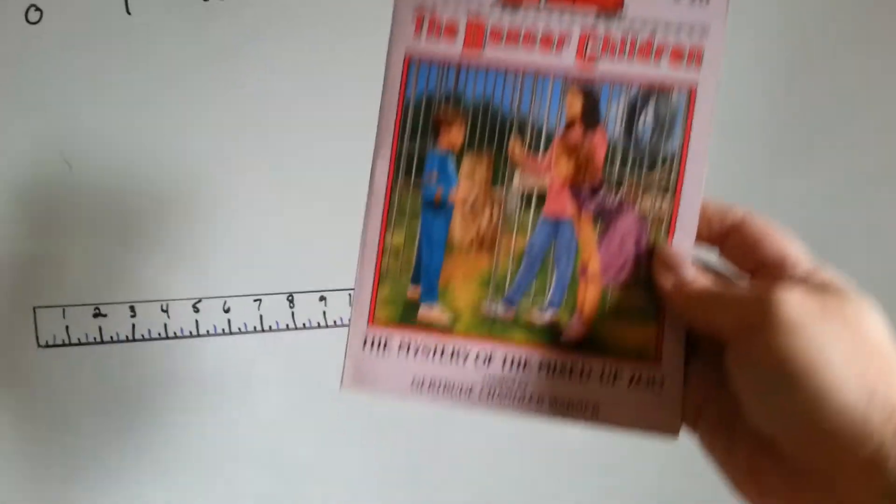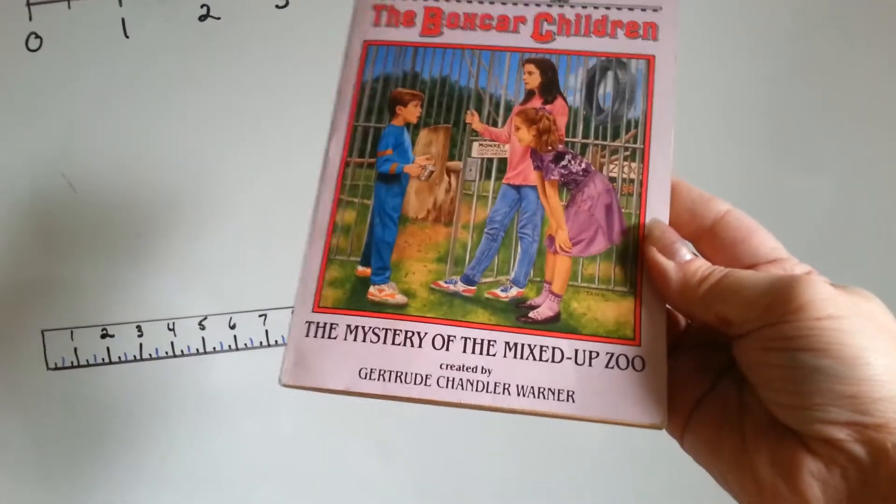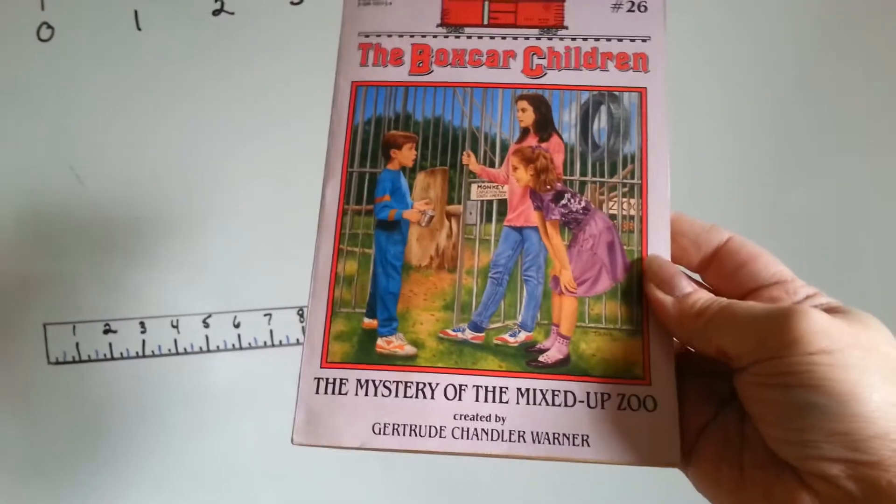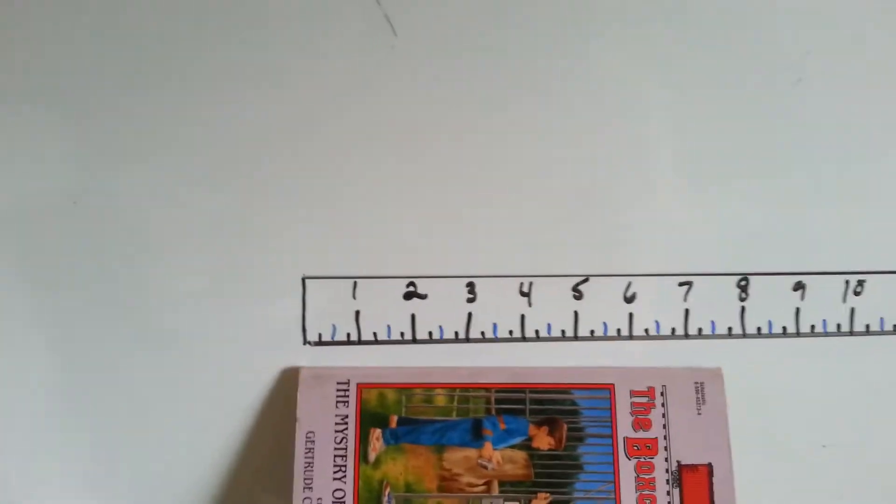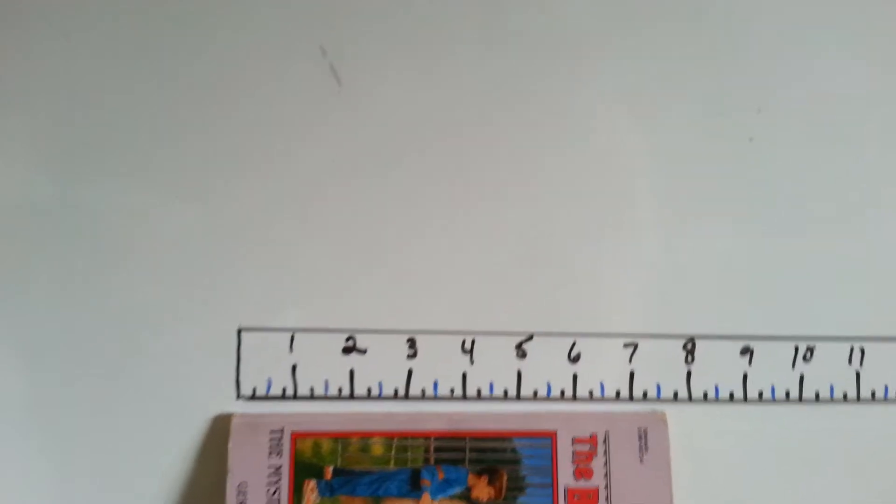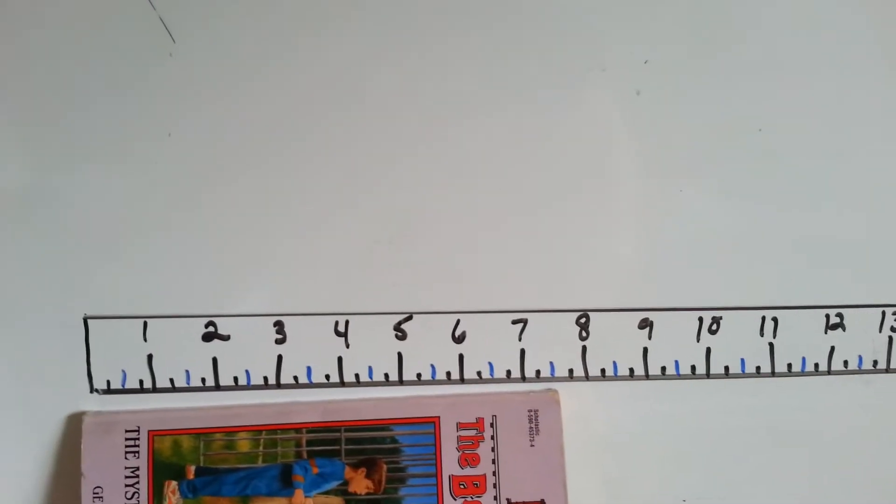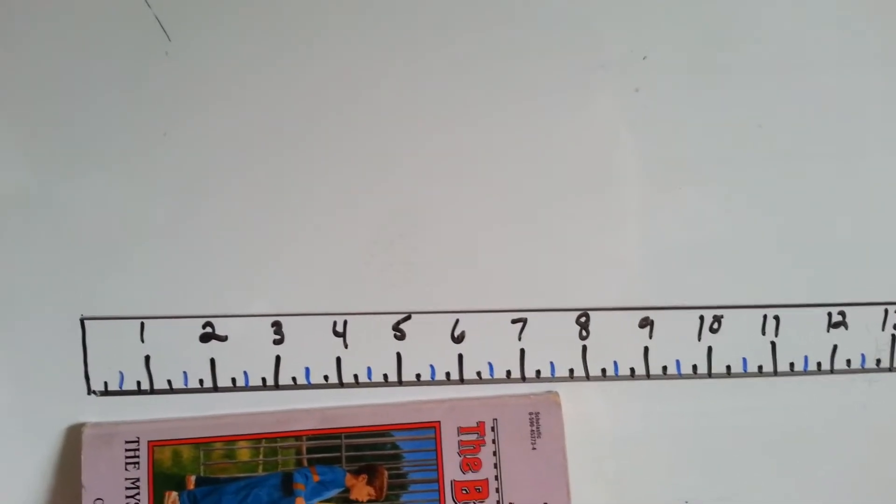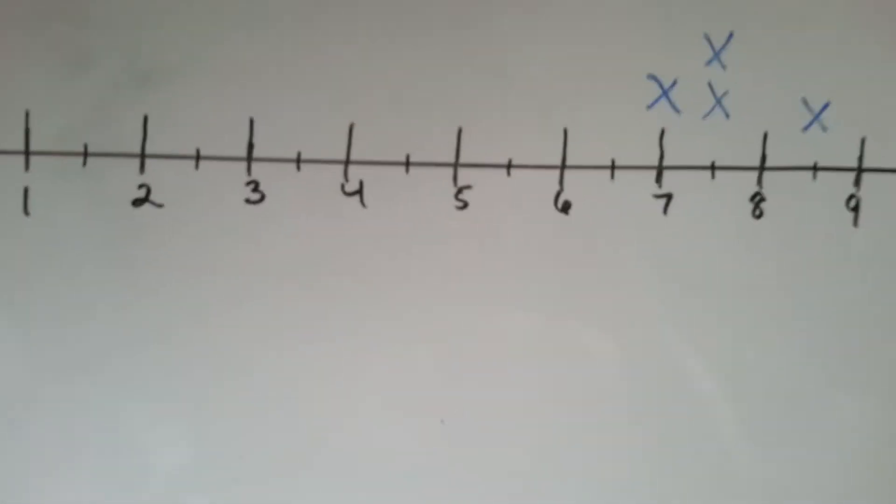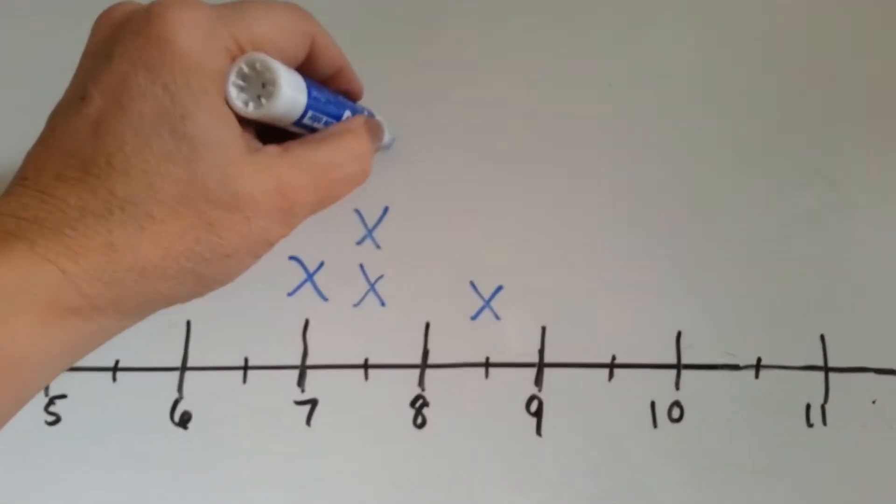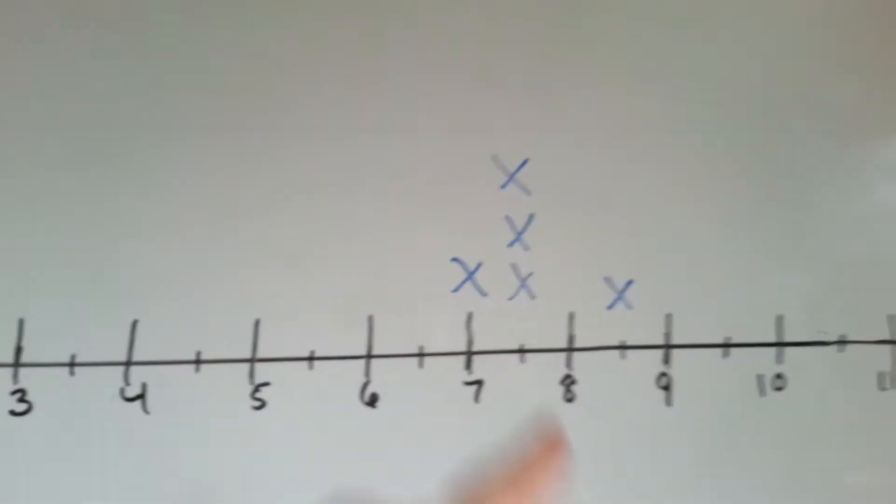Alright. Next book, Boxcar Children. The Mystery of the Mixed-Up Zoo by Gertrude Chandler Warner. Let's measure the boxcar children. Look at that. It's at seven and a half. See it right in between the seven and the eight? Boxcar Children is also seven and a half. Looks like the seven and a half are winning, huh?